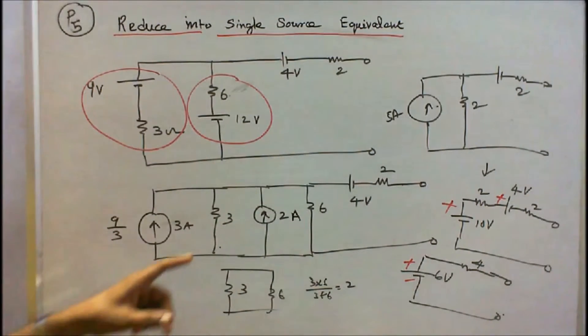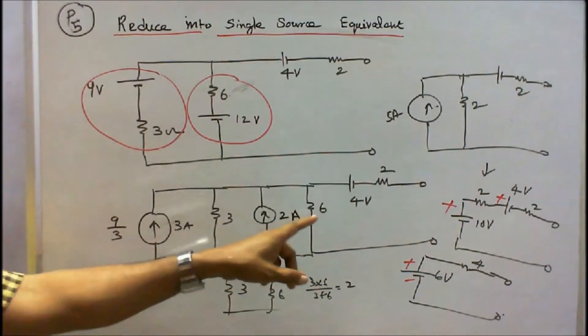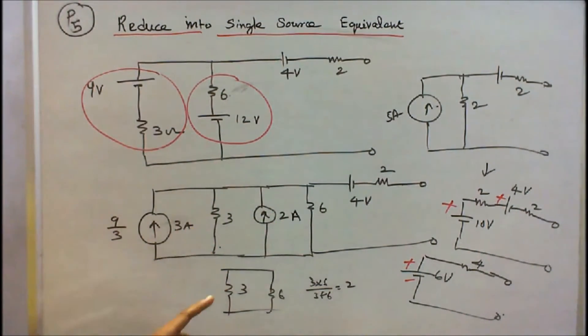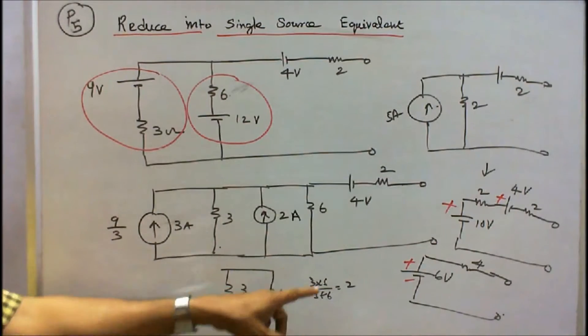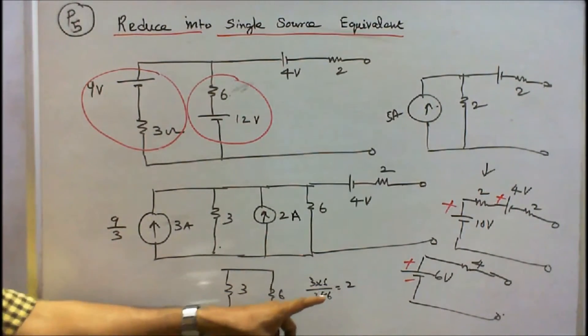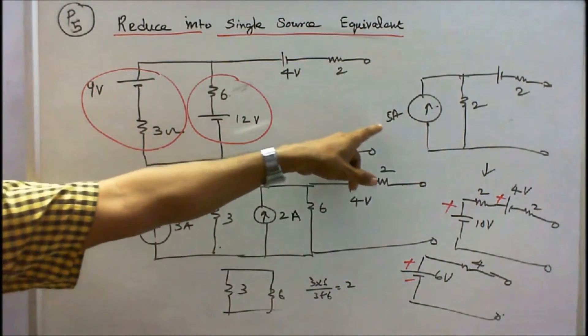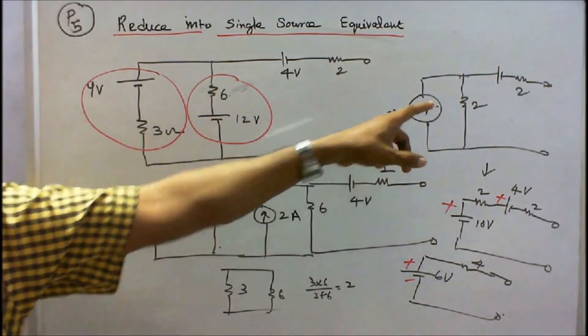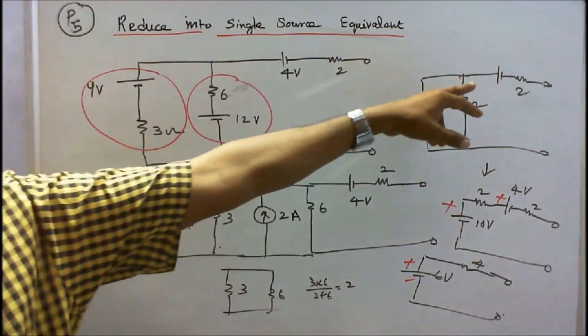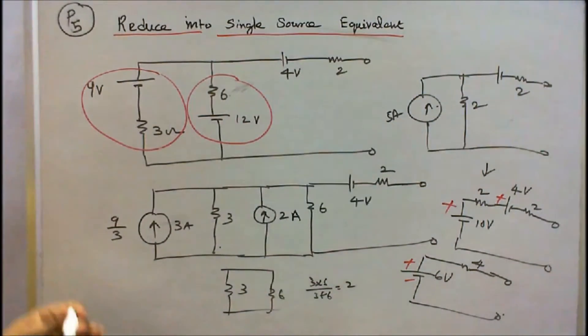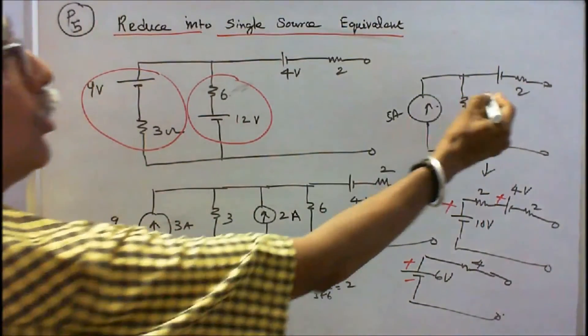The 2 resistors, 3 ohm and 6 ohm, are connected in parallel. Therefore 3 into 6 divided by 3 plus 6, that is equal to 2 ohms. This gives 5 amps with 2 ohms, and separately 4 volts with 4 volts.